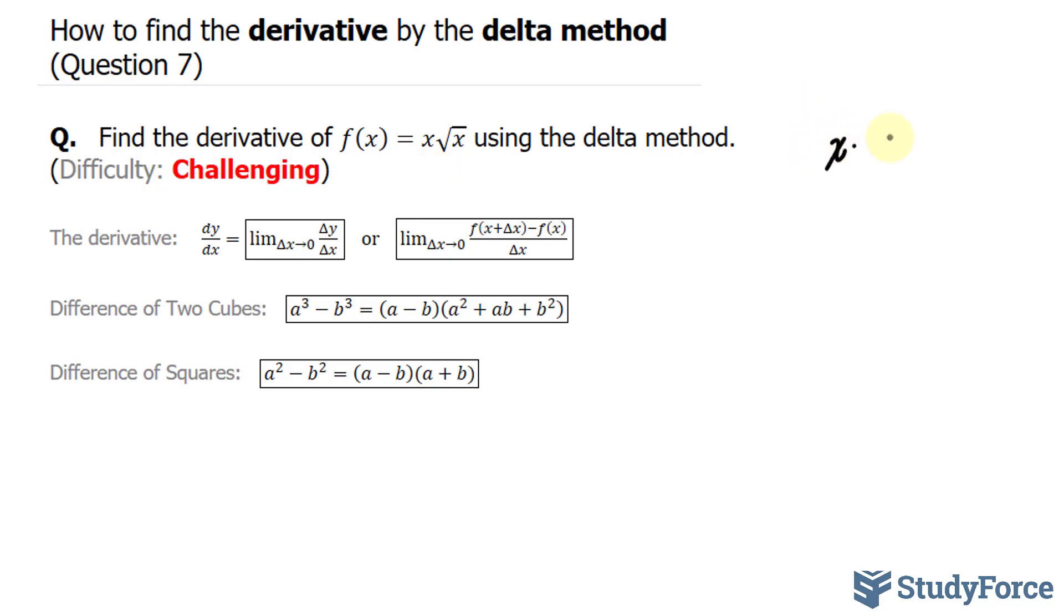So we have x times x to the power of half. This is the same thing as the square root of x. And the bases are the same and they're being multiplied, so we add the exponents one and half. We end up with x to the power of three over two.